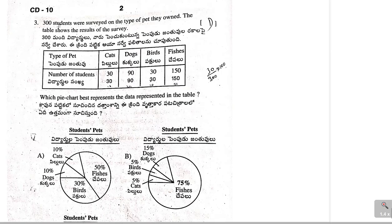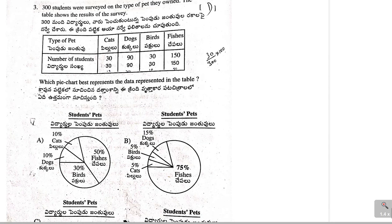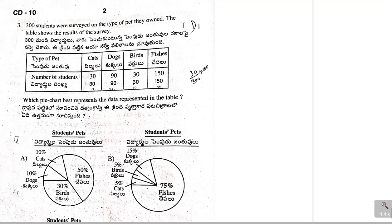Let us go to the next problem. 300 students were surveyed on the type of pet they owned. The table shows the results of the survey. Which pie chart best represents the data represented in the table? Here, if you observe the pie charts, those are given in percentages. So, let us find out the percentages here also. Total number of students equal to 300. Now, cats, that is how much? 30. So, cats percentage equal to 30 by 300 times 100, which is 10%.